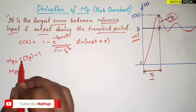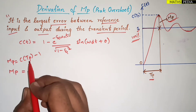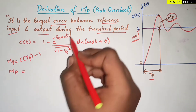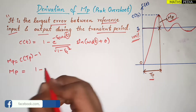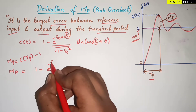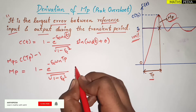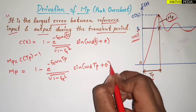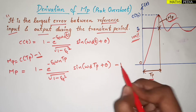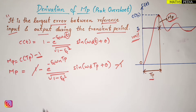So Mp = c(tp) − 1. To get c(tp), wherever t appears in c(t) we place tp. It becomes: 1 − e^(−ζωn·tp) / √(1−ζ²) · sin(ωd·tp + θ) − 1. The +1 and −1 cancel, leaving: −e^(−ζωn·tp) / √(1−ζ²) · sin(ωd·tp + θ).